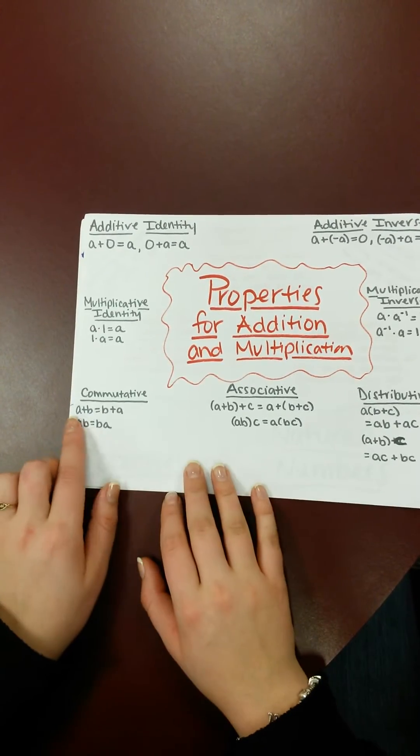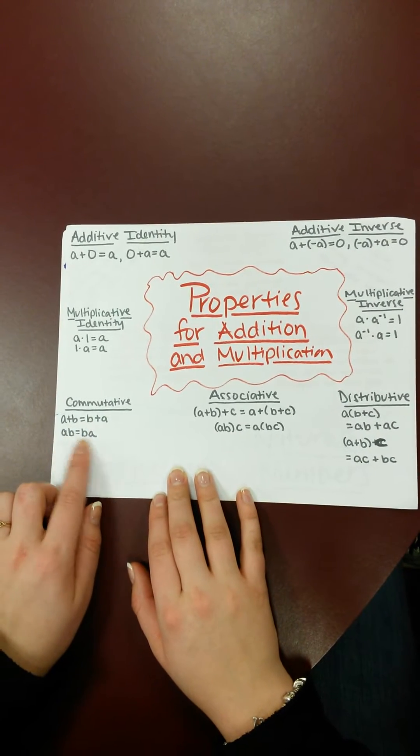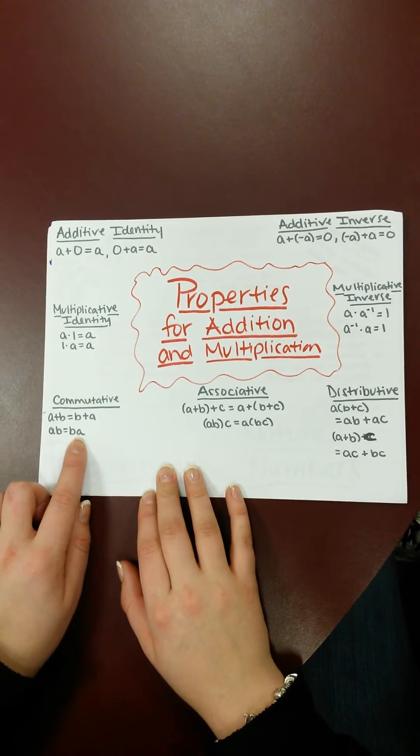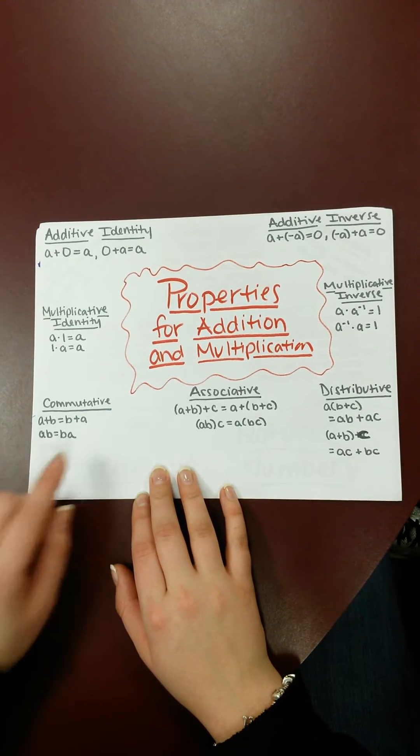Commutative is whenever you can say a plus b is also equal to b plus a, or a times b equals b times a. You just flip the order and it should be commutative.